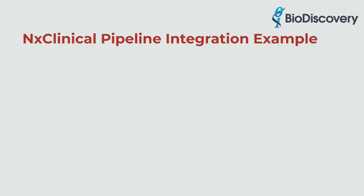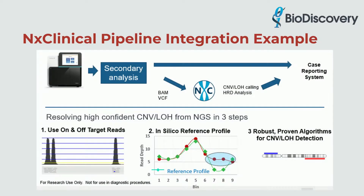NX Clinical HRD analysis can easily fit into your existing pipeline, which takes the aligned BAM files for the HRD analysis. NX Clinical uses both the on- and off-target reads to generate a robust in-silico reference to extract high-confident region calls of copy number change and LOH. Subsequently, the analysis output can be interfaced with the existing reporting system.